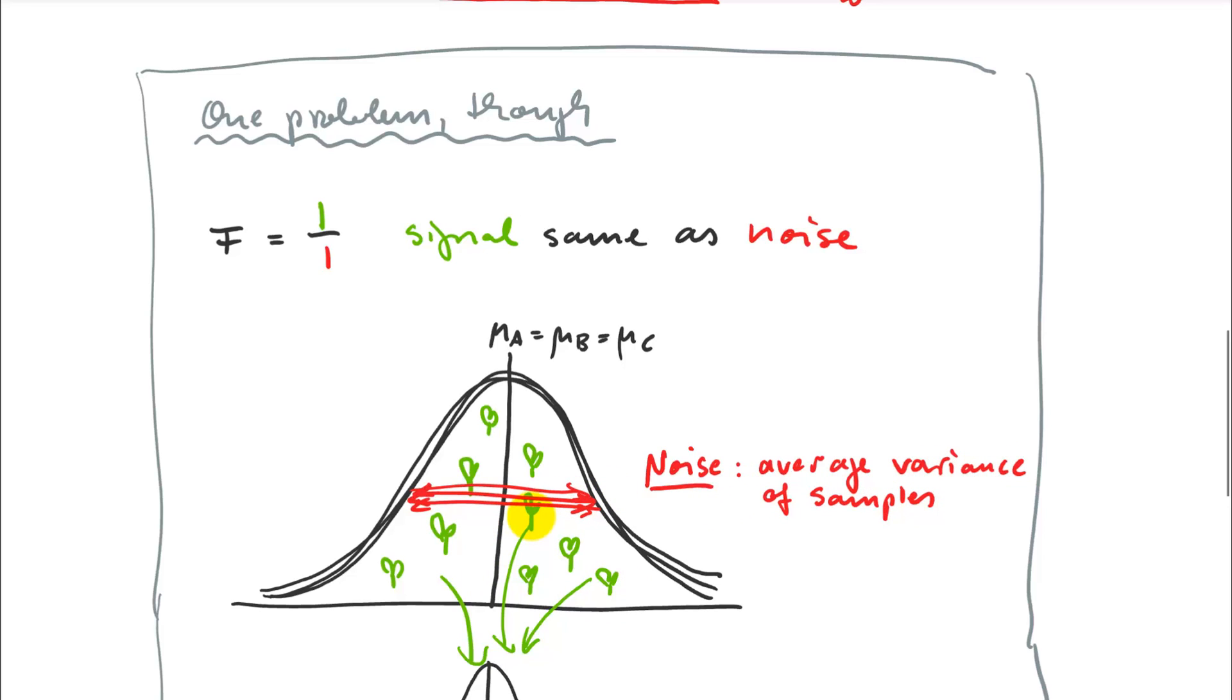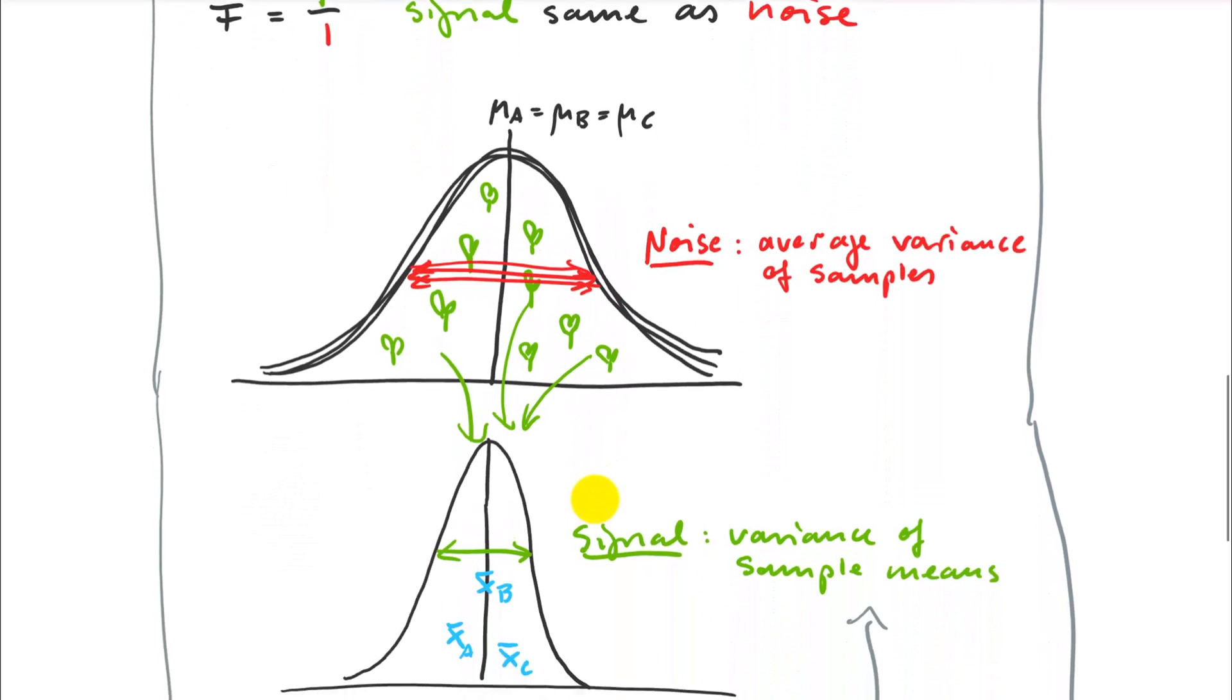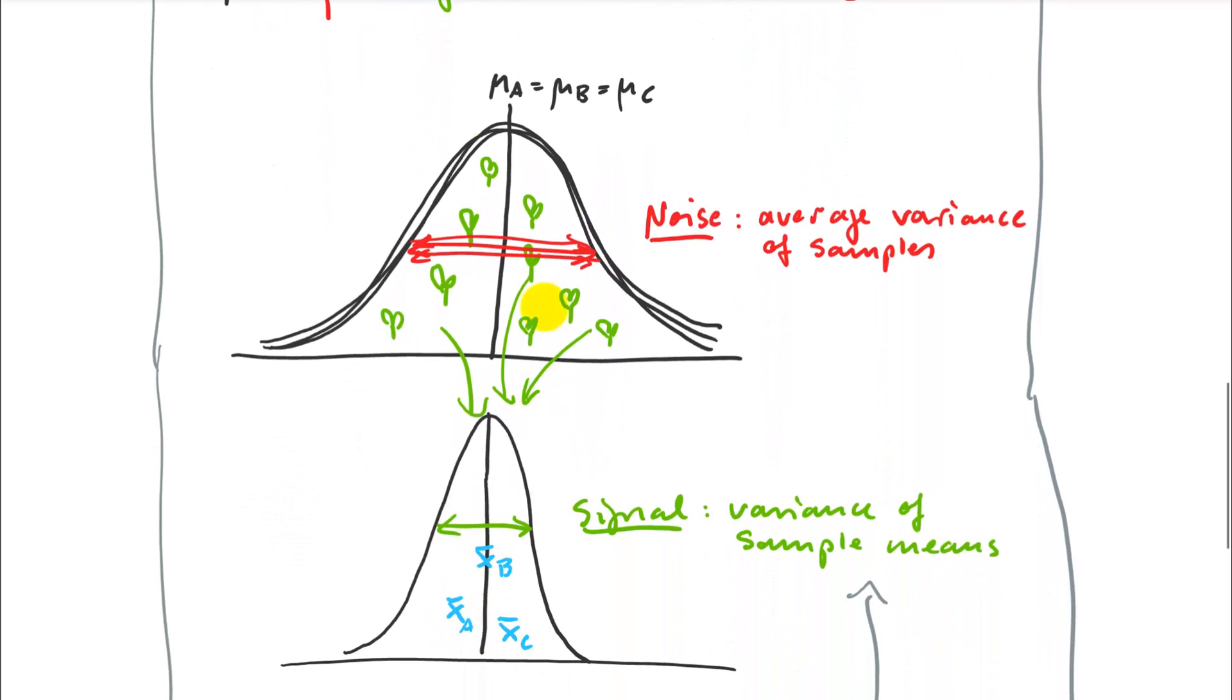But now what happens if we calculate the signal? We will take our sample here and we get some means here, but they will not have that same distribution. That's a problem. If we want a one to one ratio, it should be the same, but it's not. We explored this with the central limit theorem. Those distributions will be a lot narrower.